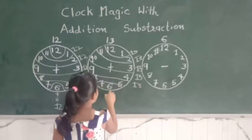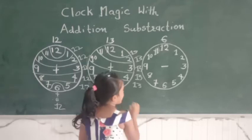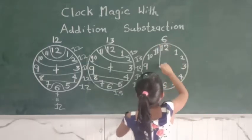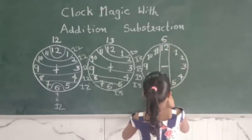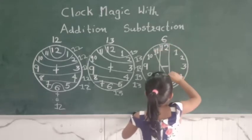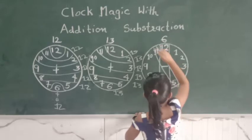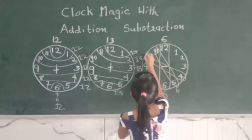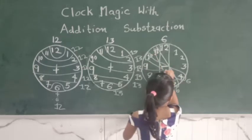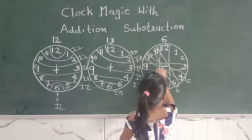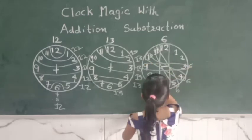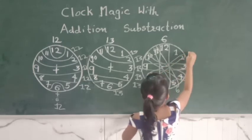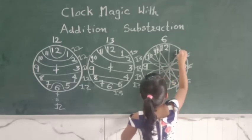7 plus 6 is 13. Now for subtraction: 12 minus 6 is 6. 11 minus 5 is 6. 10 minus 4 is 6. 9 minus 3 is 6. 8 minus 2 is 6. 7 minus 1 is 6. Correct.